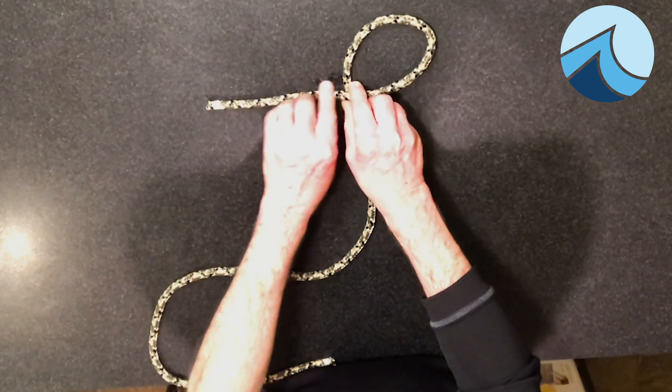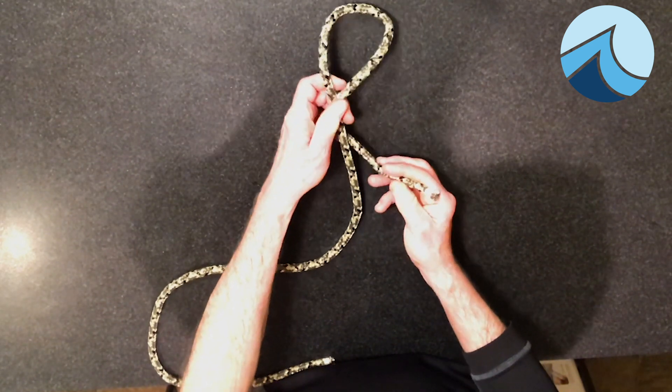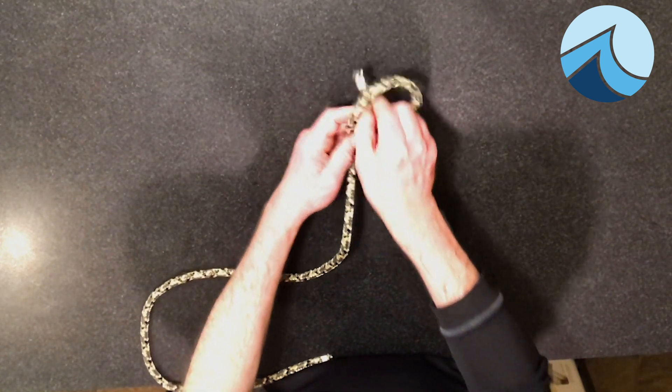Now you take the end of the line, and you go back around behind the standing part of the P, up, and then back down through the hole.